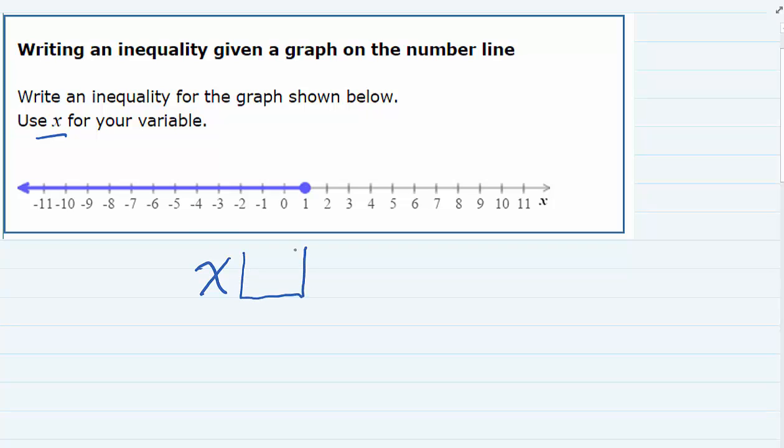We have to figure out what the inequality sign is going to be and we have to figure out what the number is going to be. So starting with the number, the important point is this one right here that is at a tip. That's an ending point and that looks like it's exactly on 1.